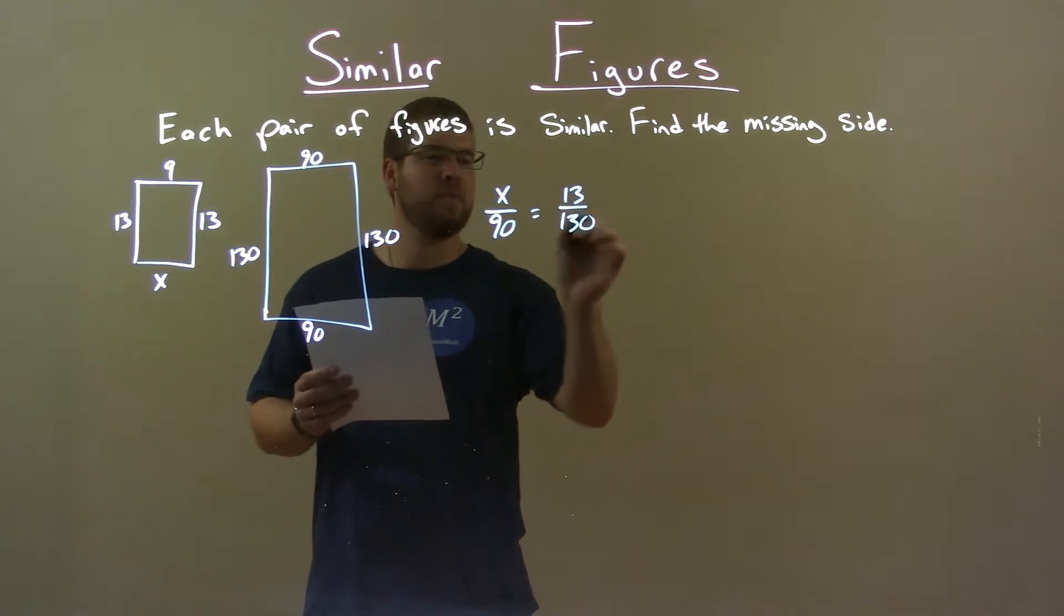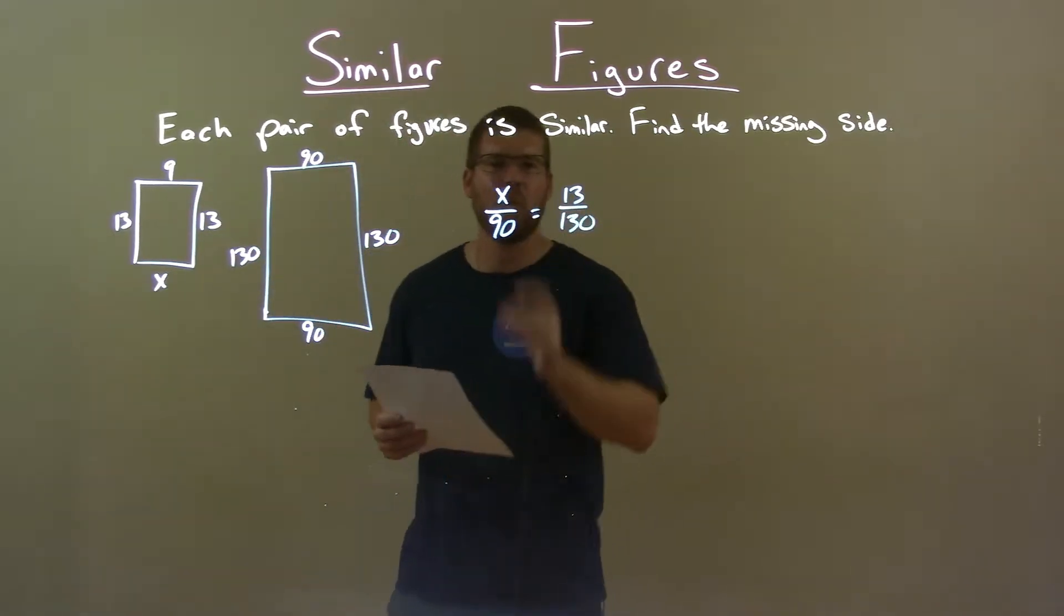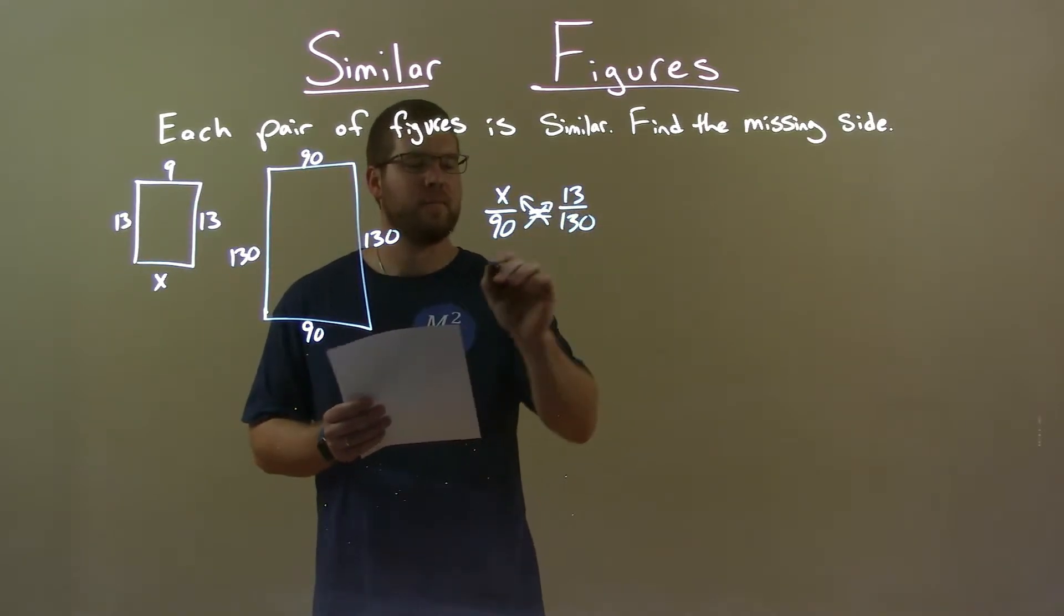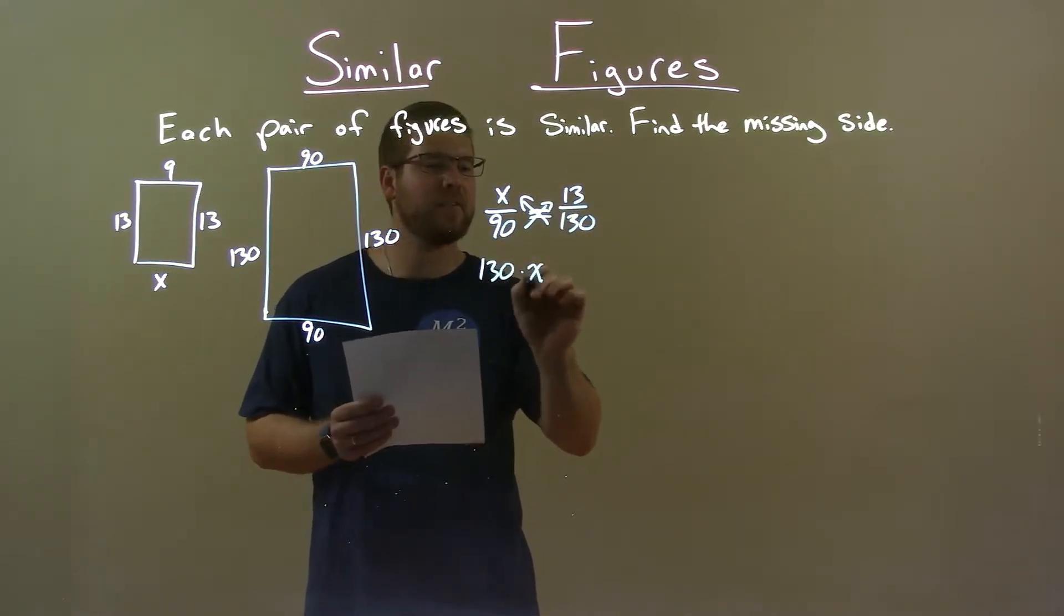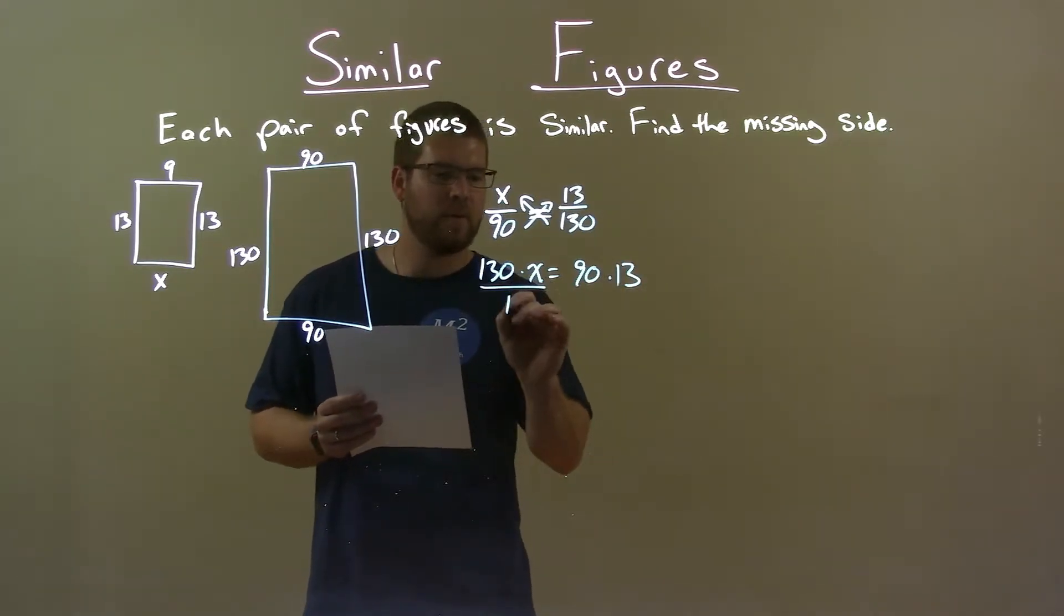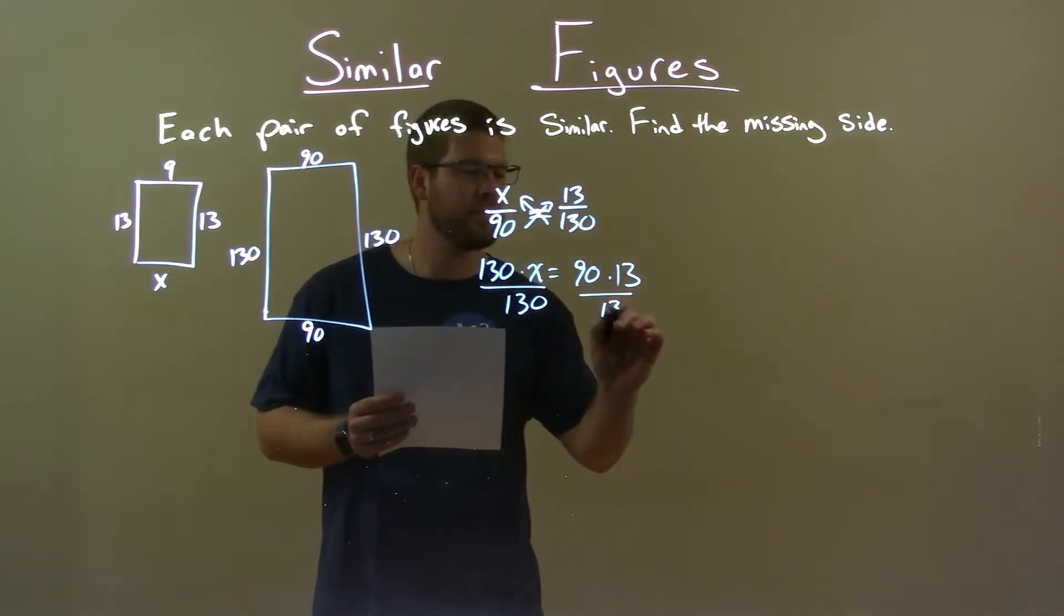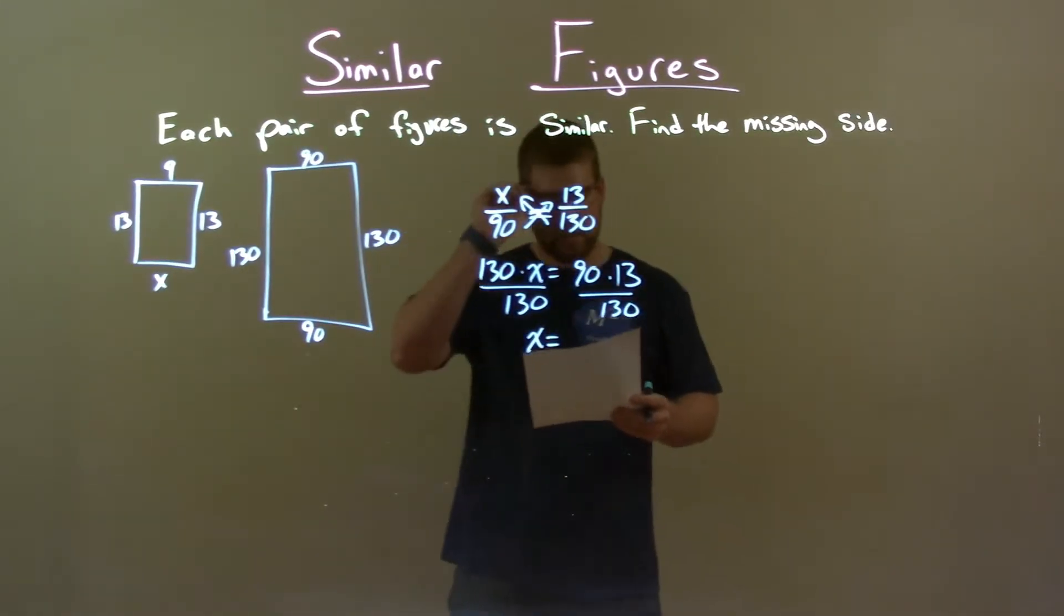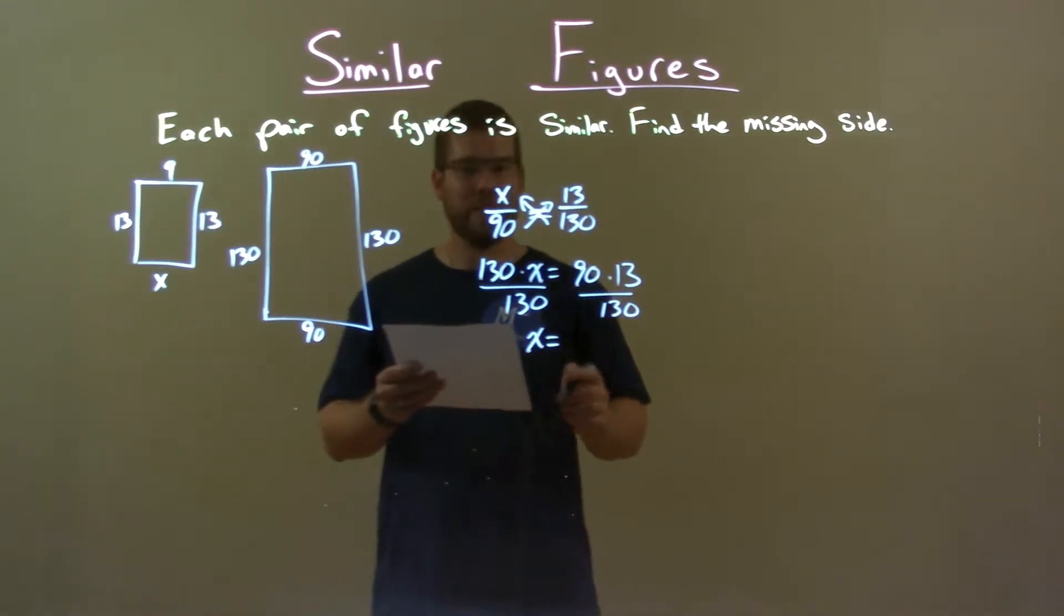Now, you might be able to see this right off the bat. It's okay if you don't, we'll keep going. So we cross multiply here. 130 times X equals 90 times 13. Then we divide both sides by 130. We got X by itself here. 90 times 13 divided by 130 comes out to be 9.